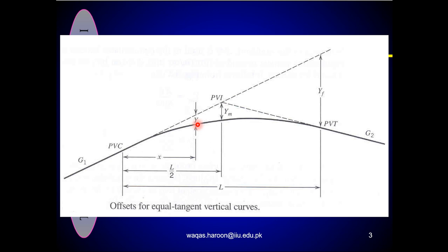Y is the offset at any distance X from the PVC, in feet or in meters, where X is the distance from the PVC in feet or in meters. YM is the mid-curve offset in feet or in meters. YF is the offset at the end of the vertical curve in feet or in meters. In this figure, you are viewing from curve left to the right side.